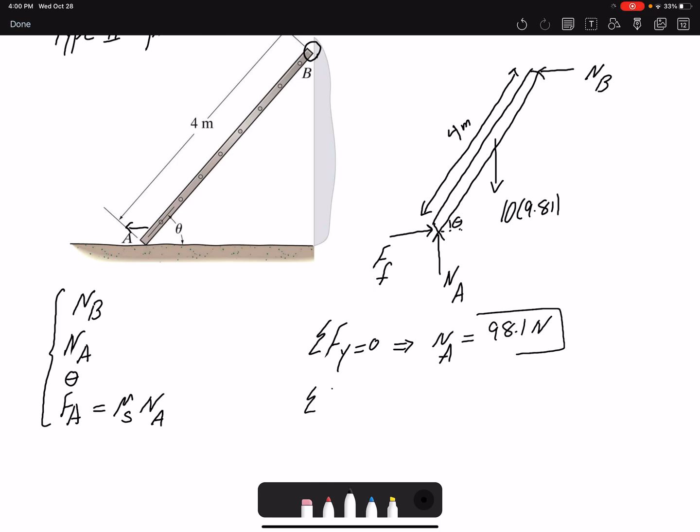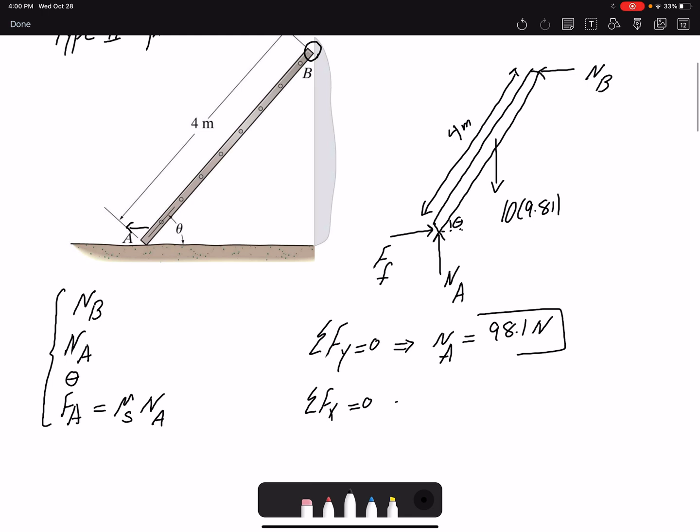Then summation of forces in x direction equal zero. I have the friction force at A minus Nb equal zero, so Nb would be equal to the friction force. But what is the friction force at A? It's simply mu times Na. Mu is 0.3.